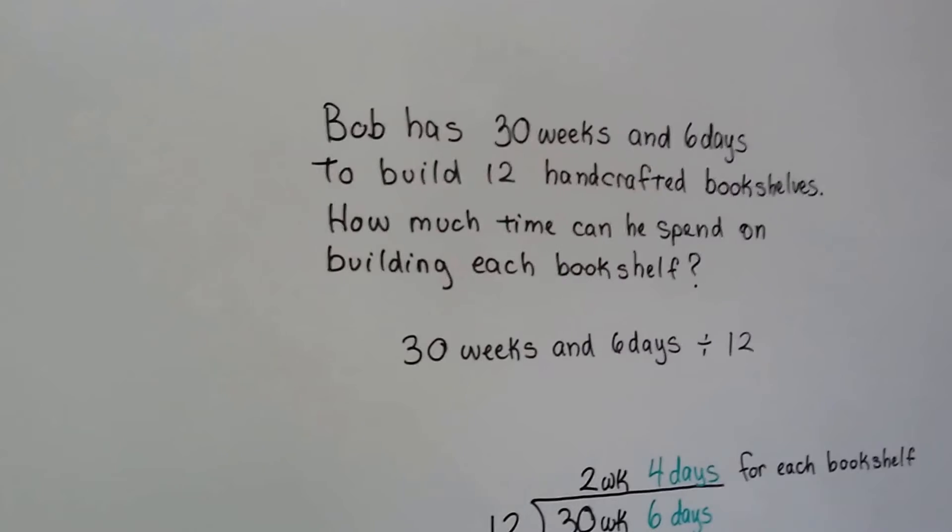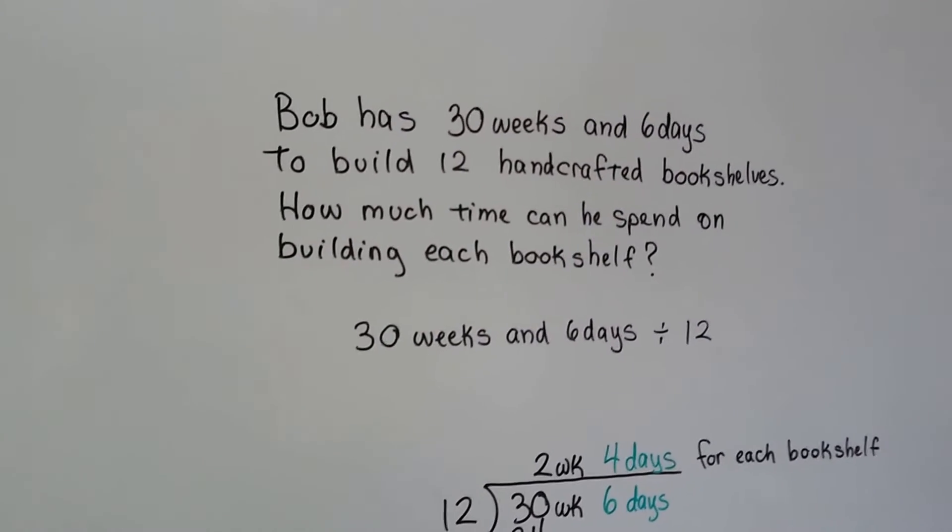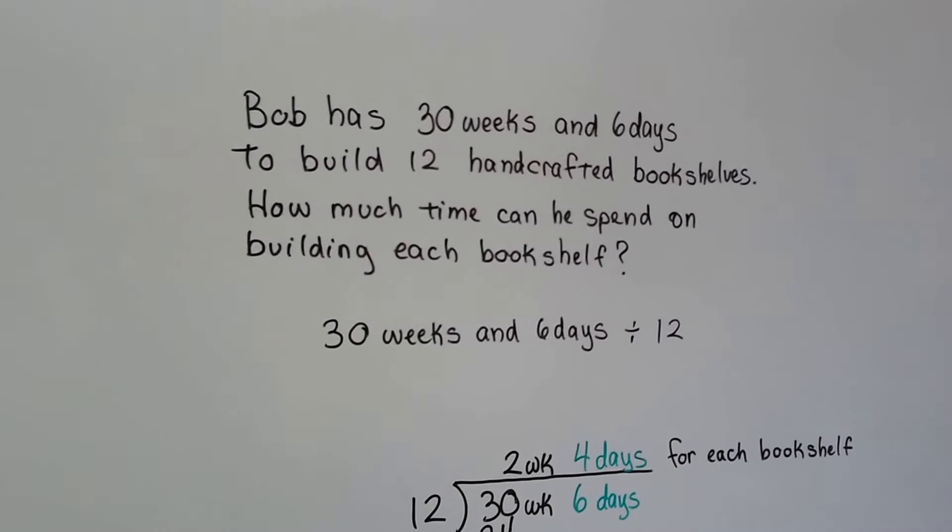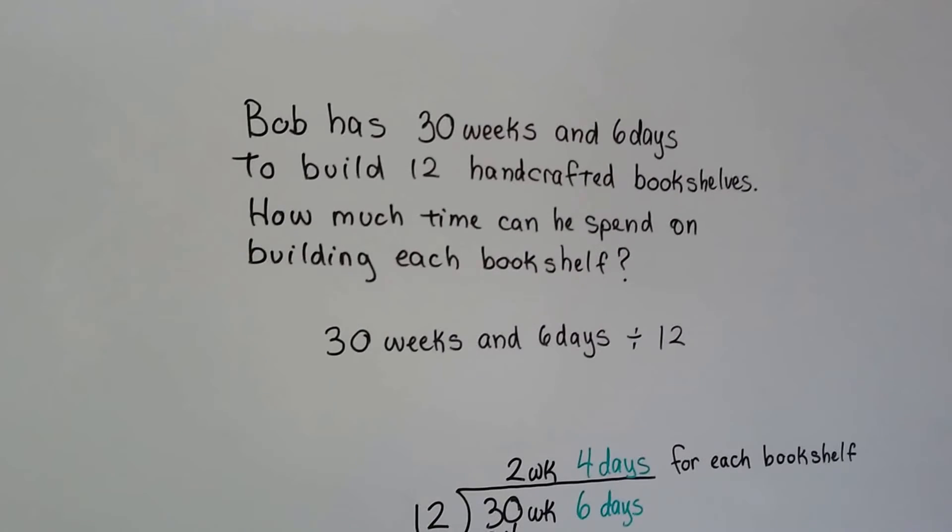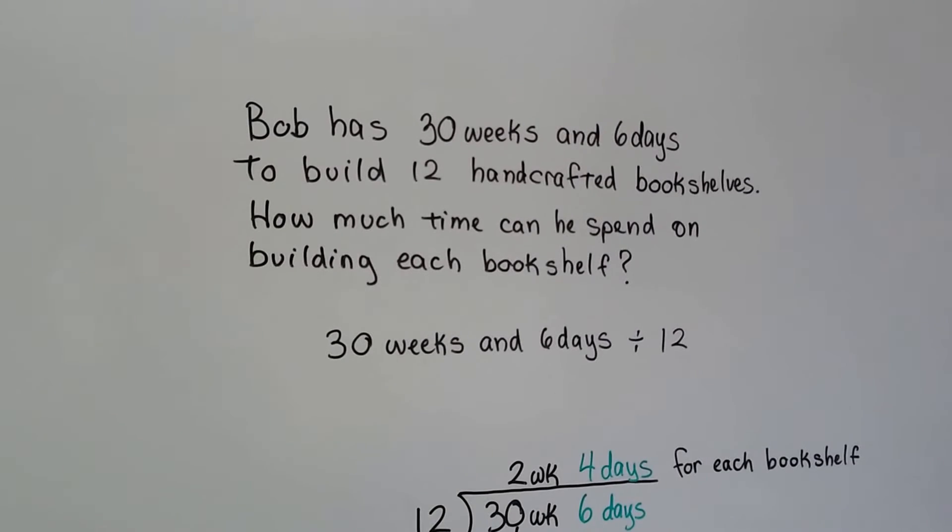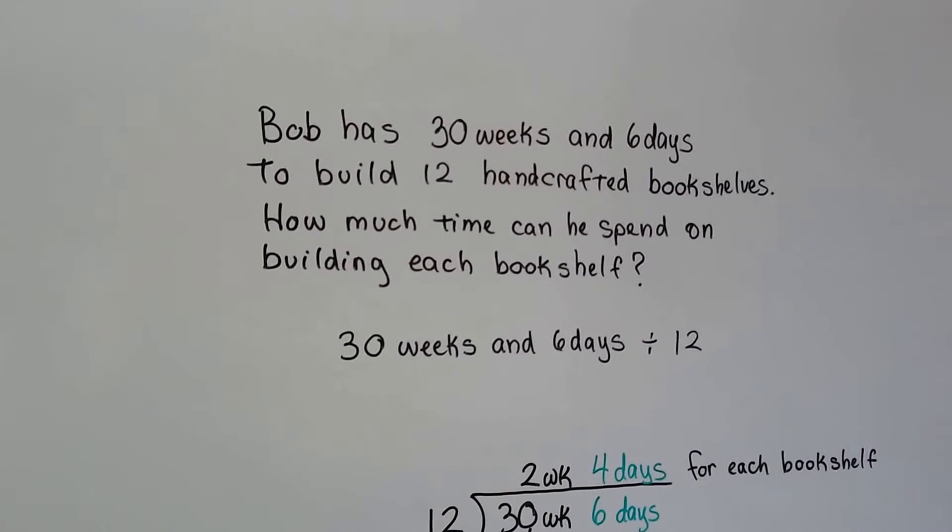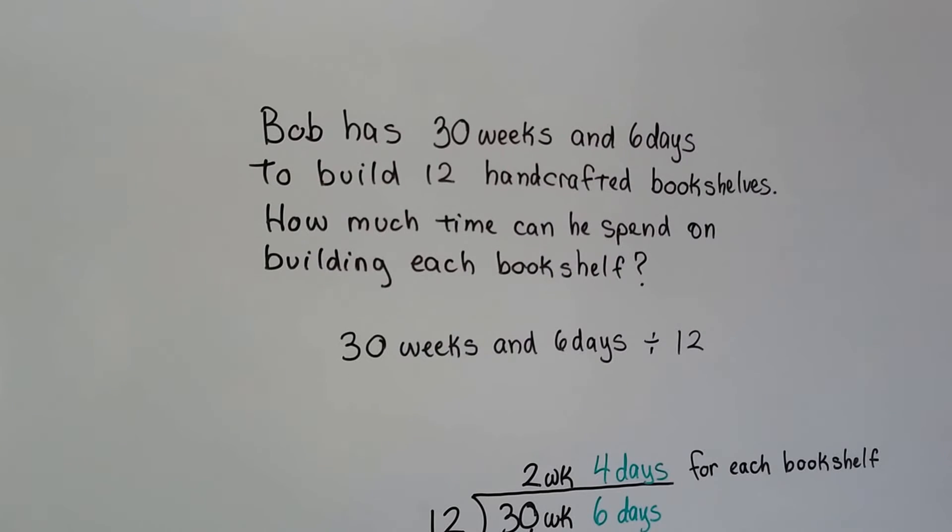Let's look at this as a word problem. Bob has 30 weeks and 6 days to build 12 handcrafted bookshelves. So he got an order from somebody. Maybe he's a carpenter and he makes beautiful bookshelves with beautiful artwork on them. And he's got 30 weeks and 6 days to make 12 of them. So how much time can he spend on building each bookshelf?